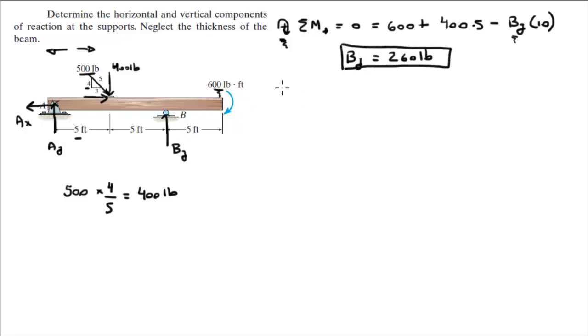Now, the sum of the forces in the Y is equal to 0. In the Y, we have Ay going up plus By going up minus the 400-pound component of the 500-pound force right here.